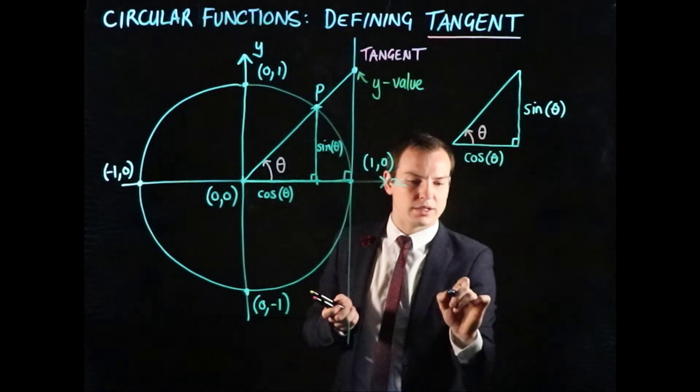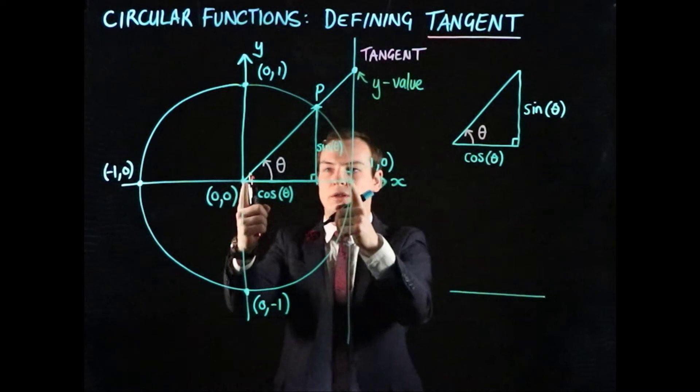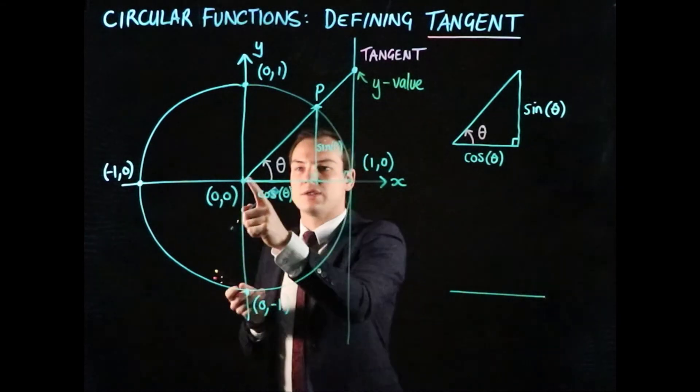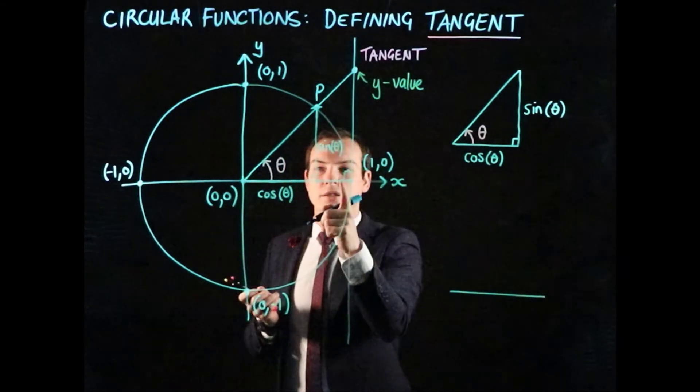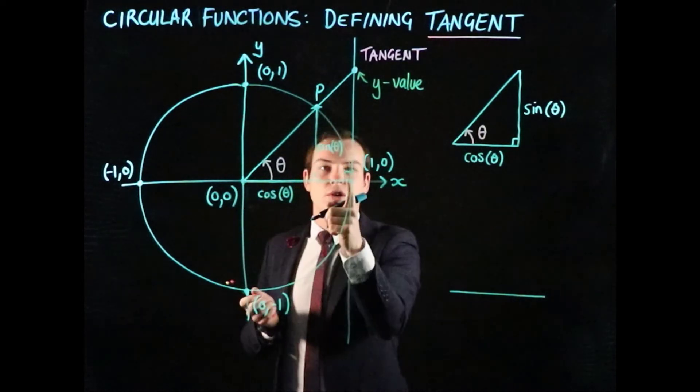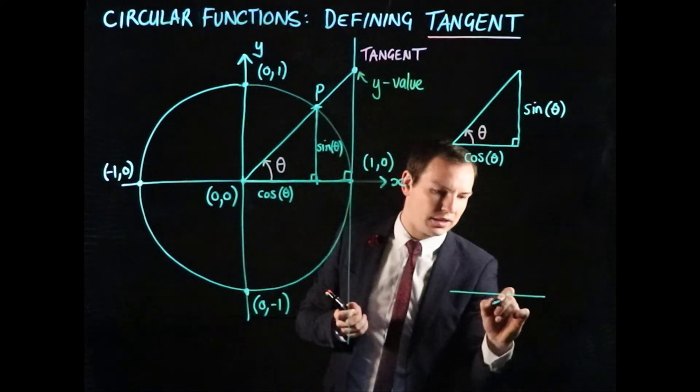Drawing this out, the base has a length of exactly 1, because it's a unit circle and the distance from (0,0) to (1,0) is 1.